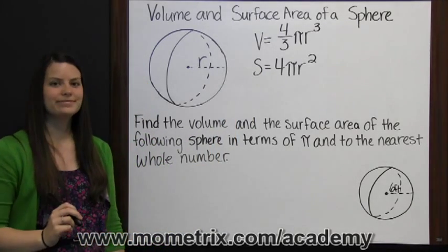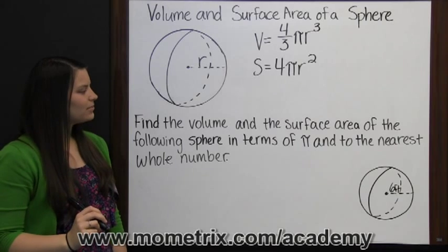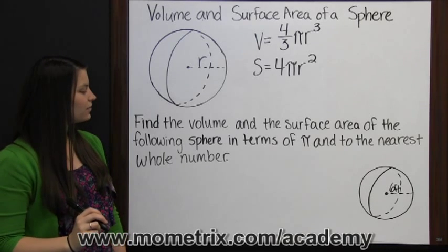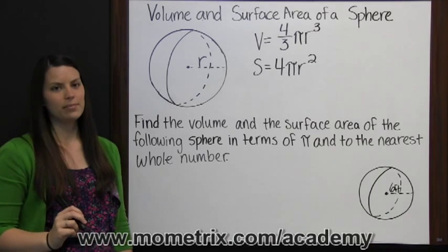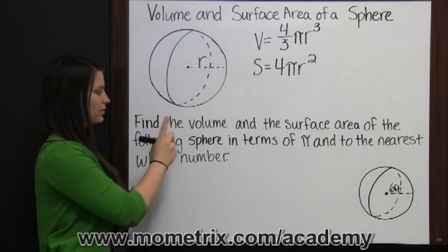Let's look at an example. Find the volume and the surface area of the following sphere in terms of pi and to the nearest whole number. We'll start with volume.